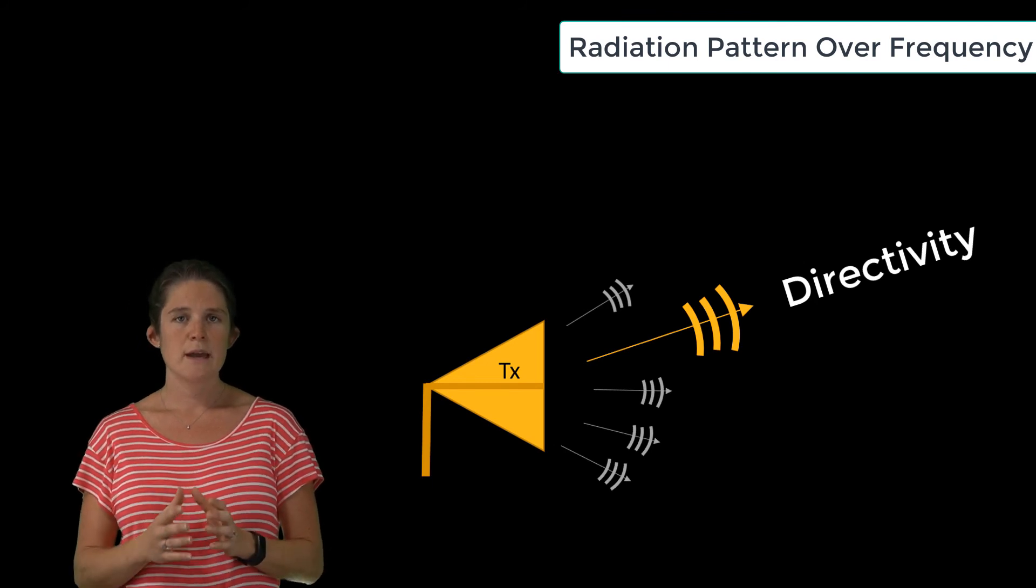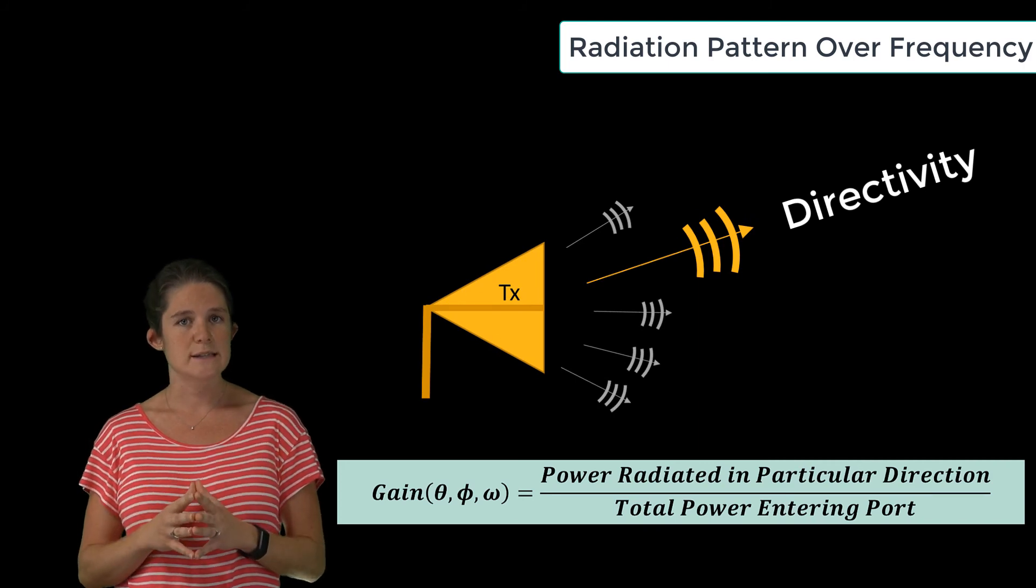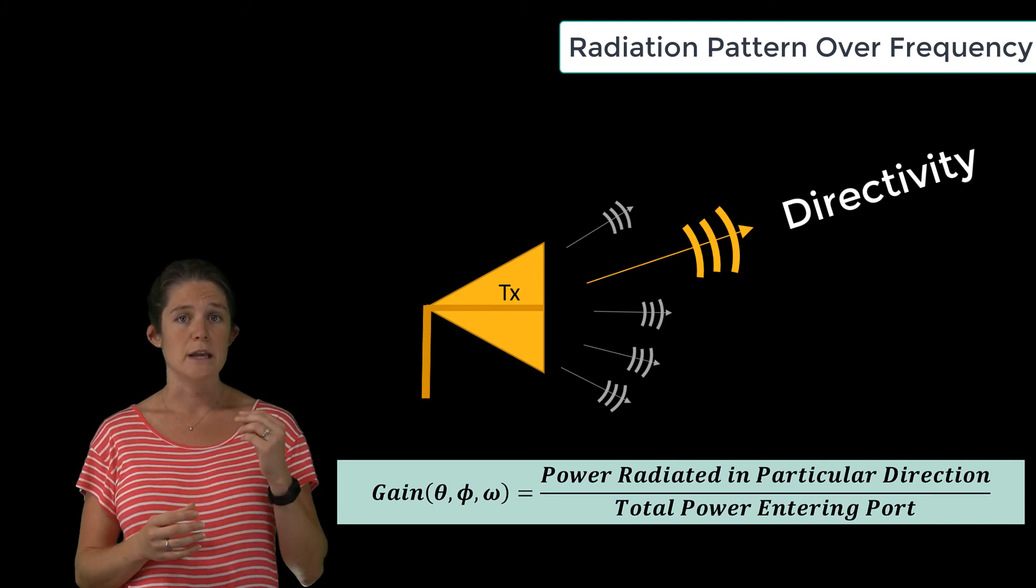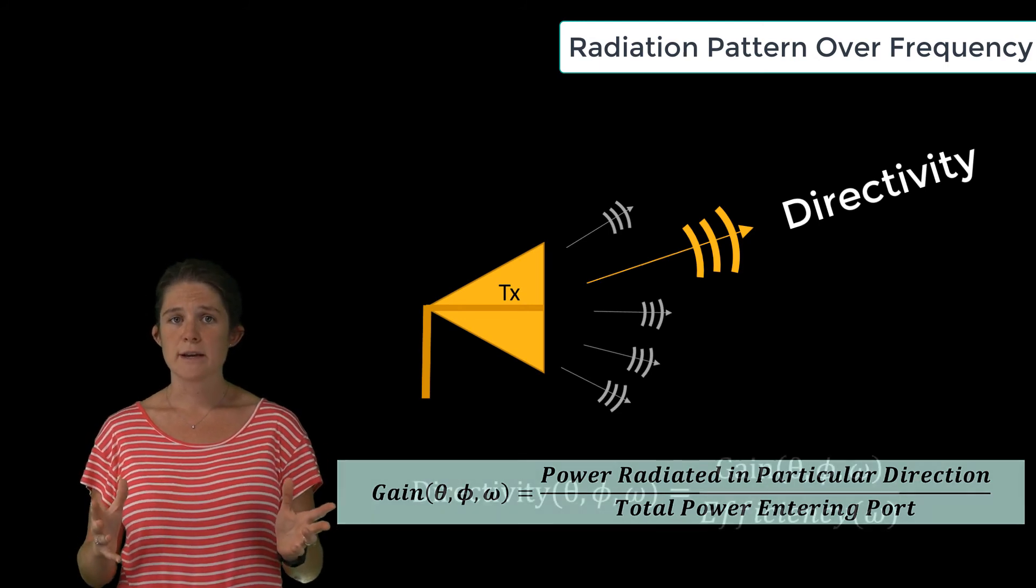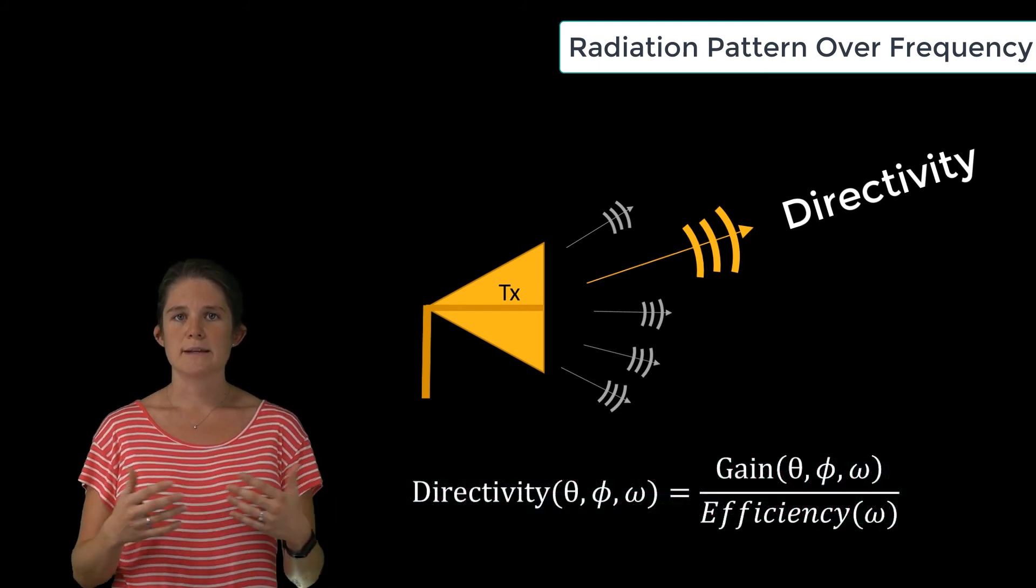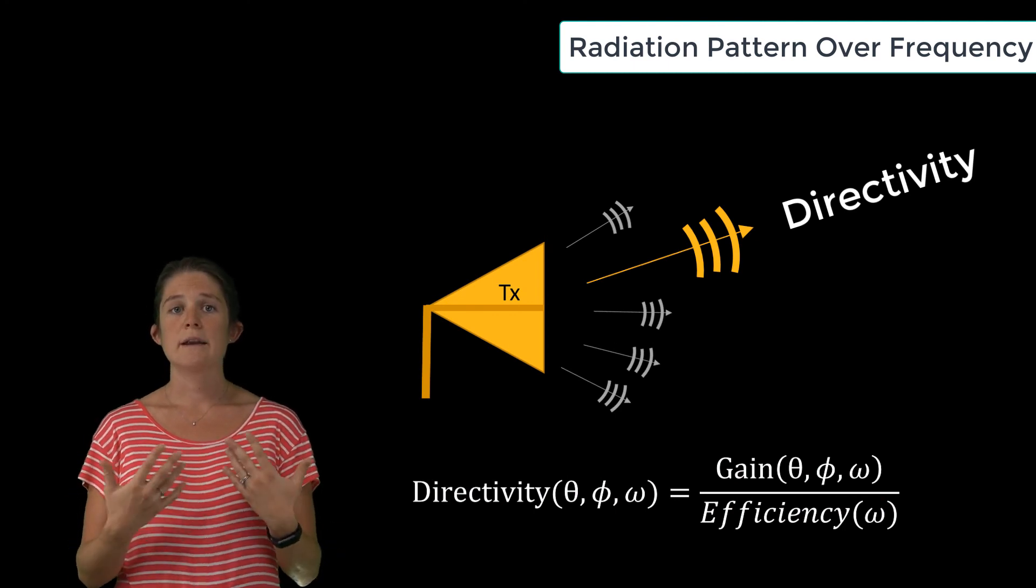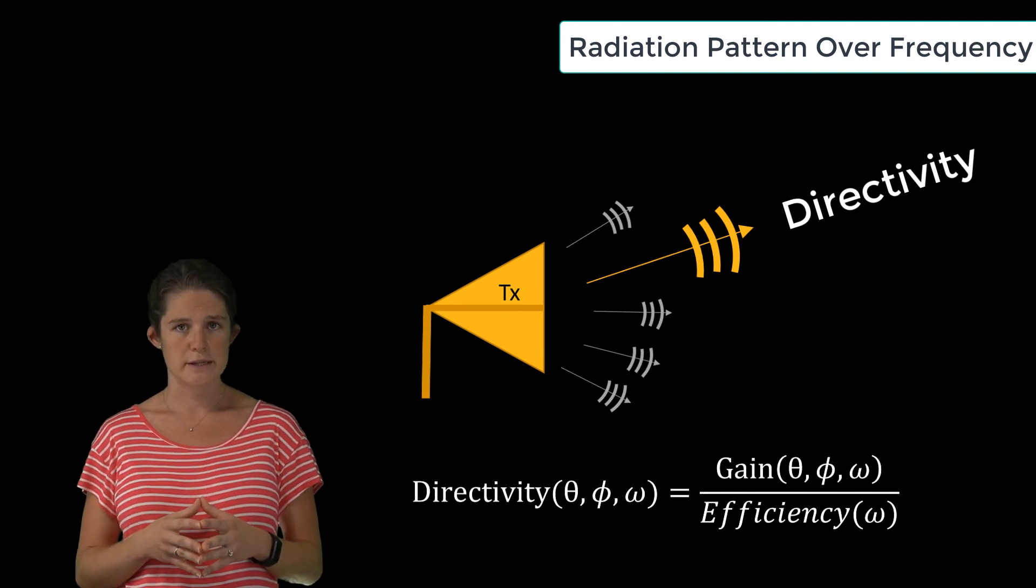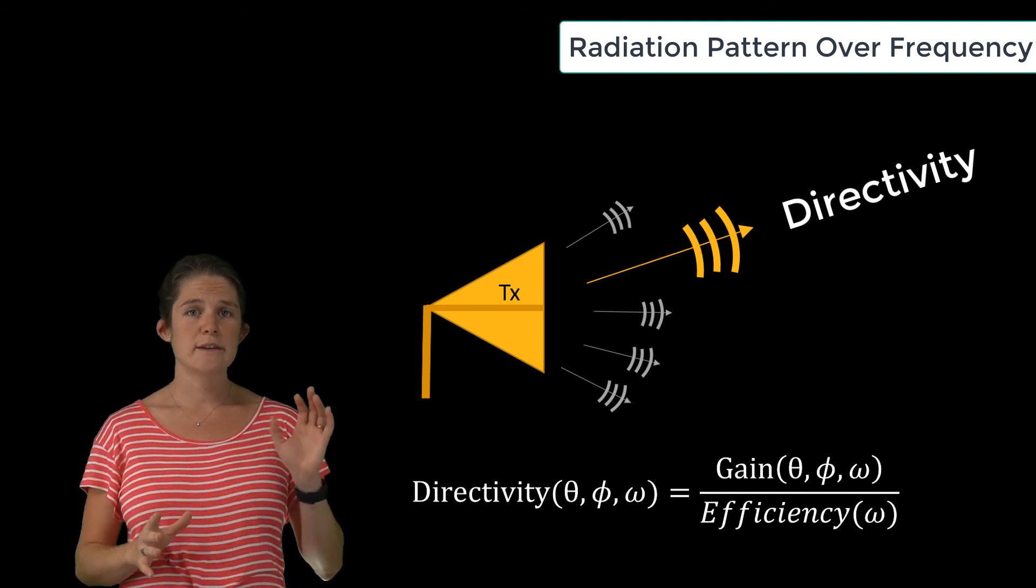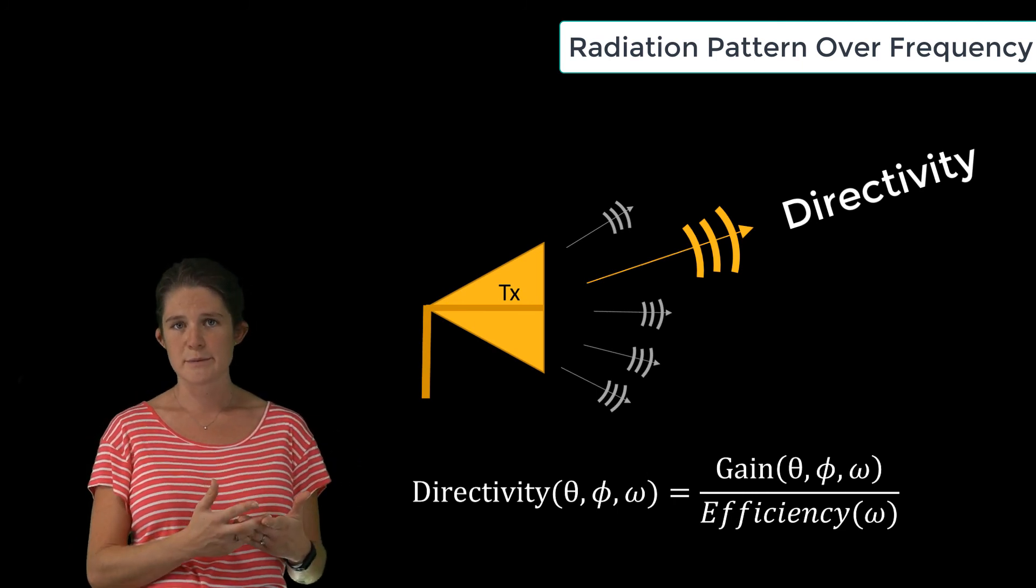Antenna gain, on the other hand, is the portion of actual input power that is successfully converted into radiation in a particular direction. It has the same pattern as directivity, but it's scaled by the antenna efficiency. It's smaller for inefficient radiators and larger for efficient radiators, and antenna efficiency also varies with frequency. I've put a link in the description of this video that goes to a module where you can learn how to simulate a dipole antenna in HFSS, which will enable you to explore this topic in further detail on your own.